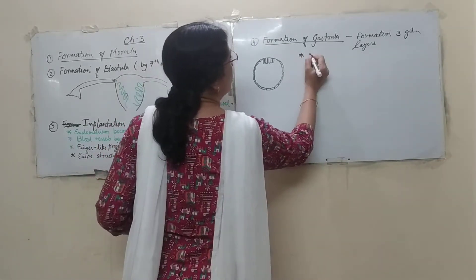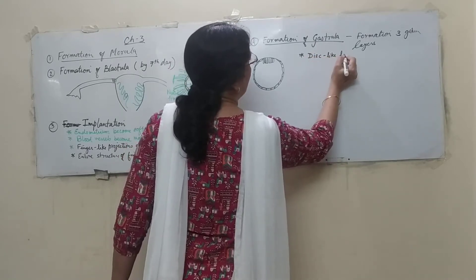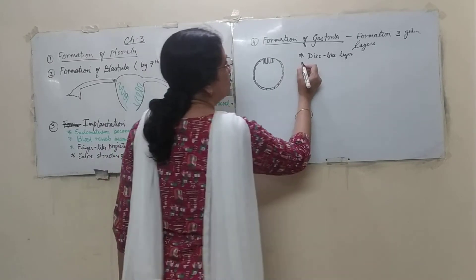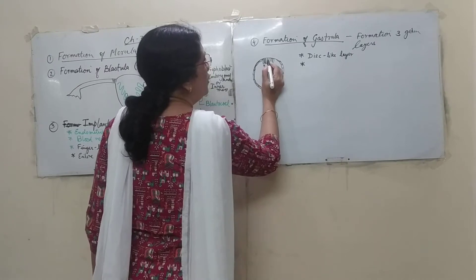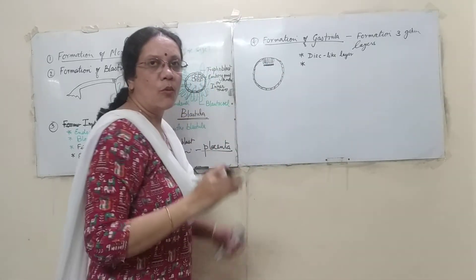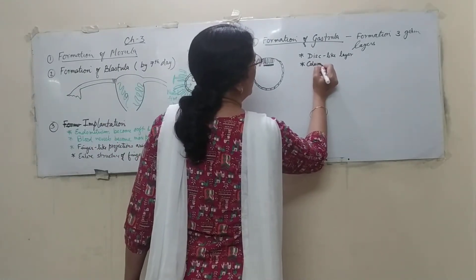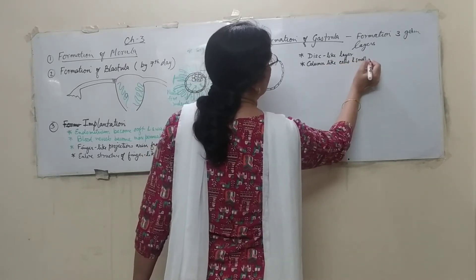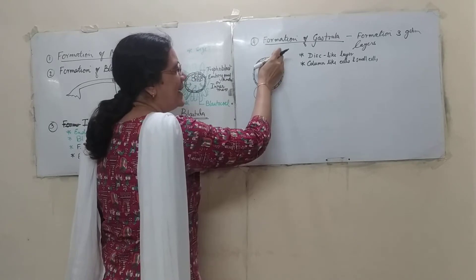From the trophoblast there are finger-like projections already forming the placenta. The disc-like embryonal layer undergoes one division to form two types of cells: one layer of tall columnar cells and one layer of small cells.